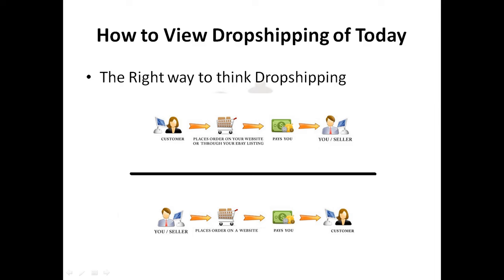Dropshipping today is comprised of two separate actions. The first action is selling; the second action is buying. The reason you separate these is so you can solve problems differently. The selling part is basically listing on eBay at a higher price than you'd be buying it at, and strategically titling and pricing it to get continuous sales. Buying is simple — you go to the website and ship it to the customer. You sell on one end and buy on the other.